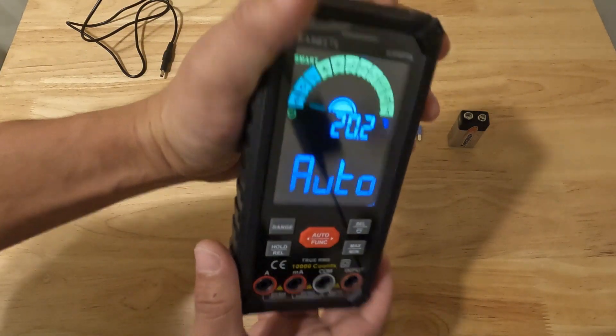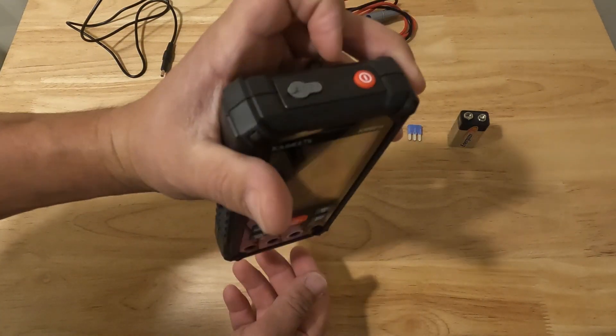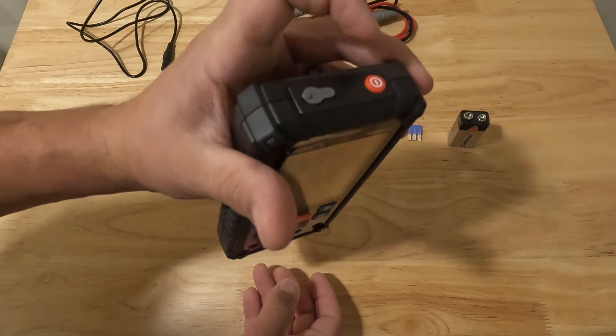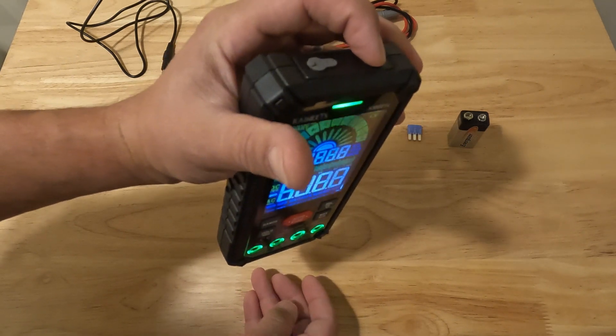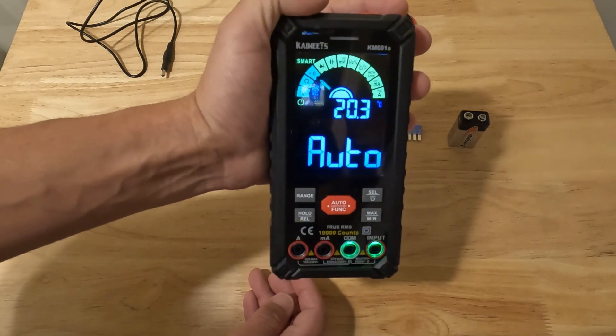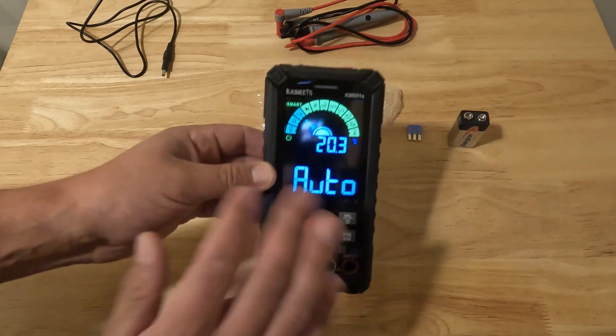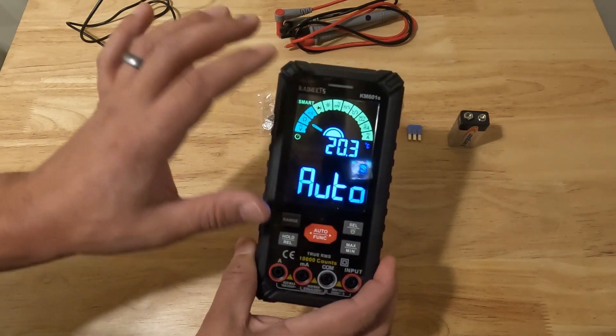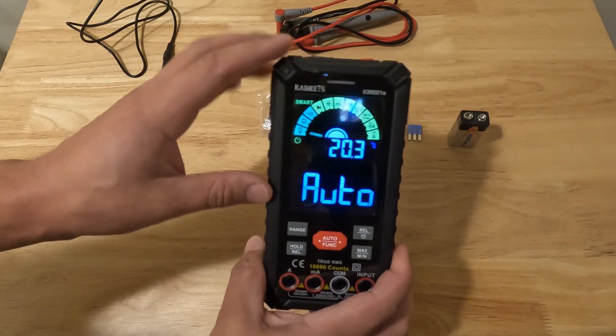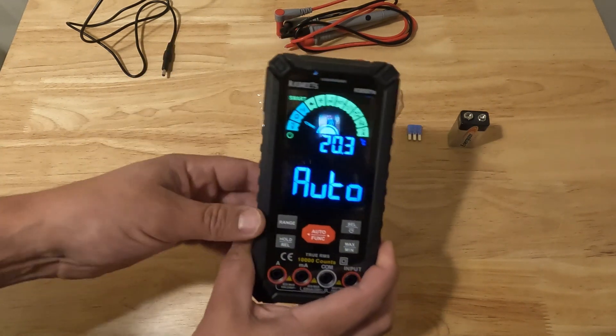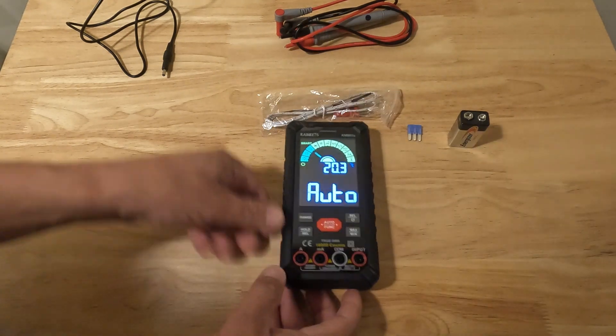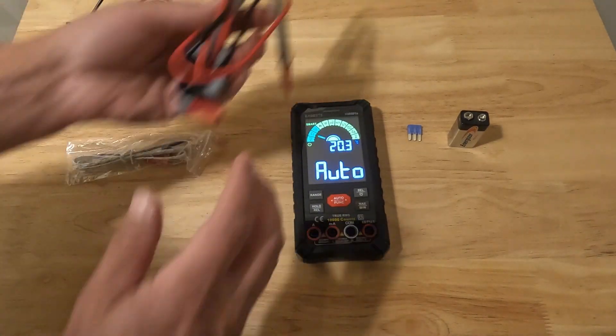To turn it off and on you just hold this power button for a couple seconds. You can see it powers right up. Now when you power this up it defaults to auto mode and I'll show you what that is, and then I'll show you how to get out of auto mode. Auto mode is probably good for a lot of applications you're going to be using. It's actually a really cool feature that they offer.